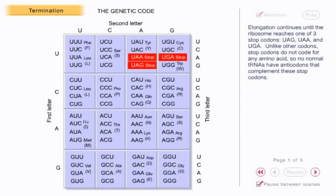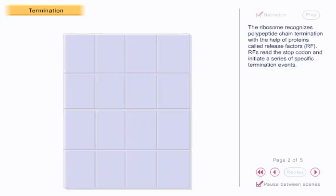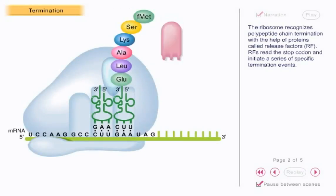Unlike other codons, stop codons do not code for any amino acid, so no normal tRNAs have anticodons that complement these stop codons. The ribosome recognizes polypeptide chain termination with the help of proteins called release factors.